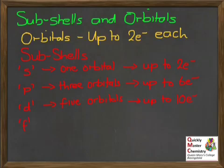Finally in our list, we've got the F subshell. An F subshell consists of 7 orbitals, and that means it can hold up to 14 electrons.